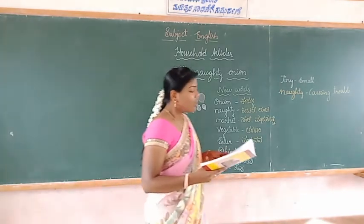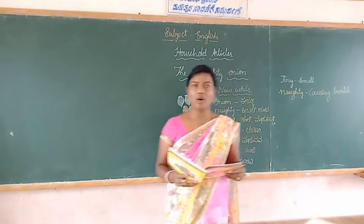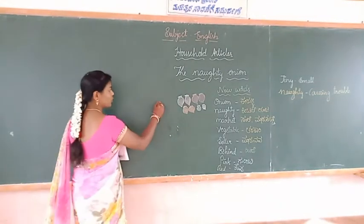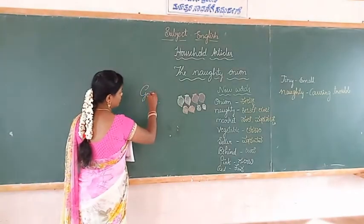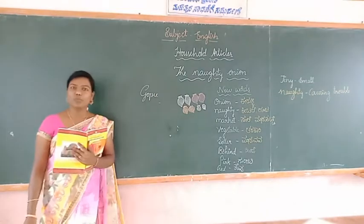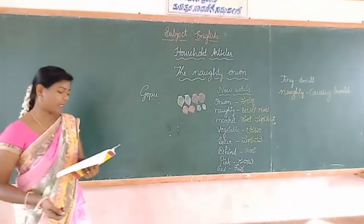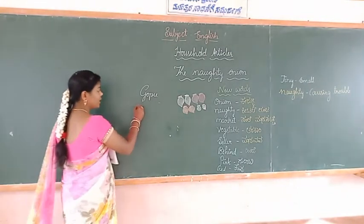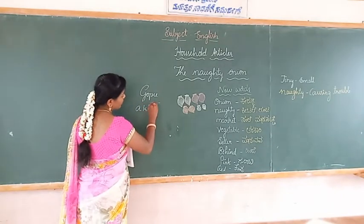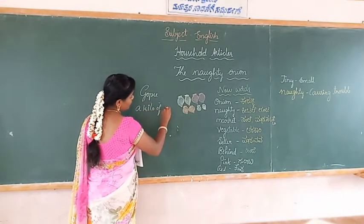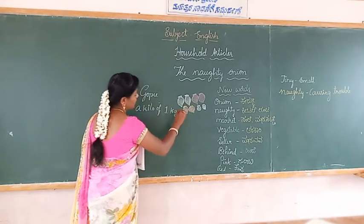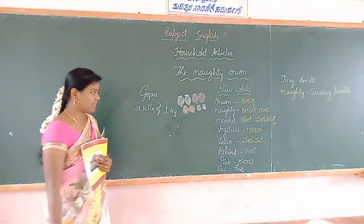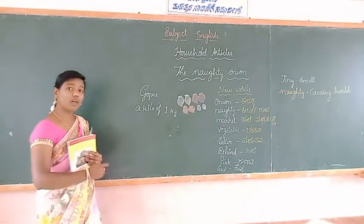Dear students, Goku went to the market one day. Who went to the market? Goku — he was a man. He went to the market and bought a kilo of onions from the vegetable seller. A kilo means 1 kg.